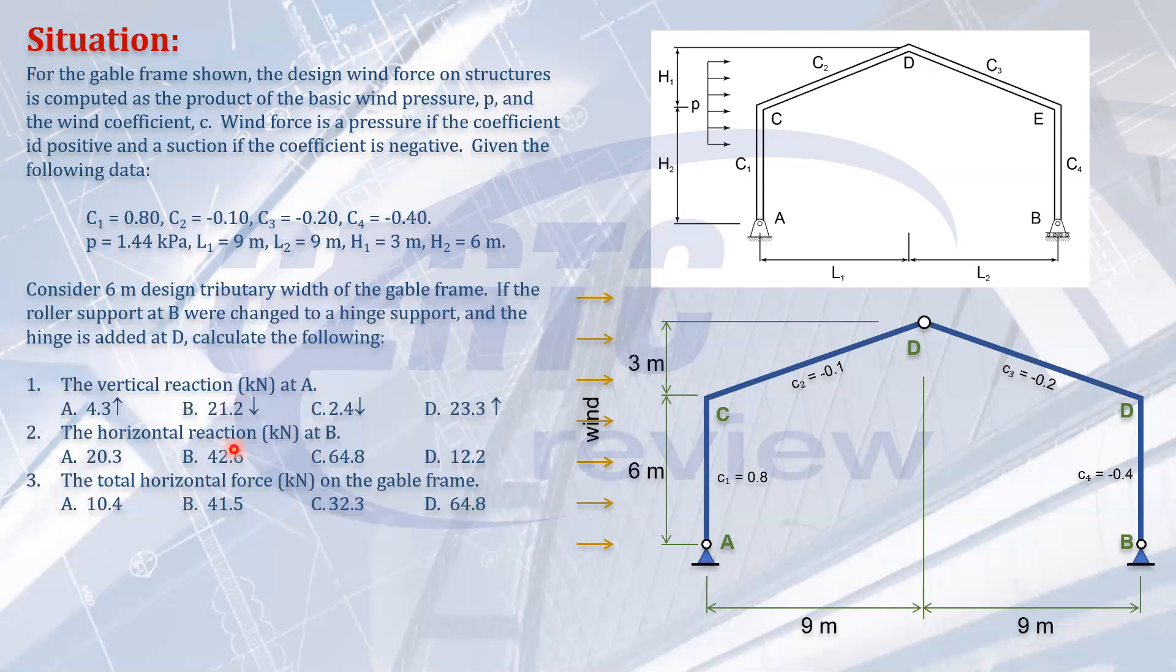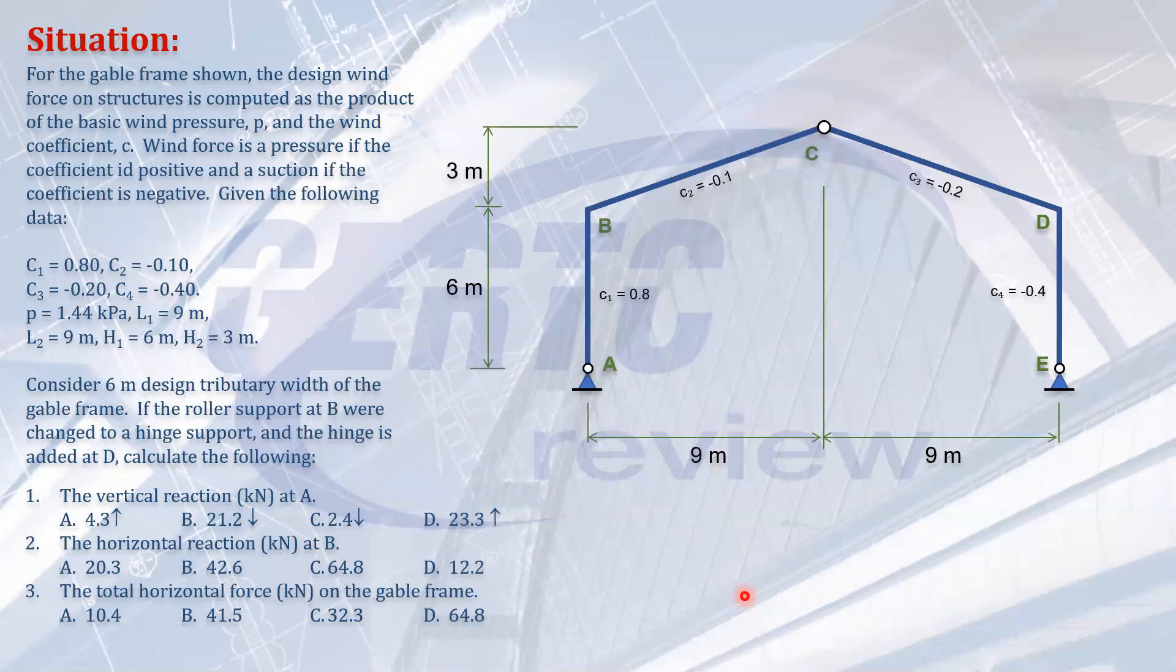The wind is coming from the left. Let's compute the forces acting. The wind force is the product of the basic wind pressure and the tributary area. For vertical member AB, the force is 1.44 times the coefficient 0.8 times the tributary area 6 meters by 6 meters, acting towards the structure because the coefficient is positive.